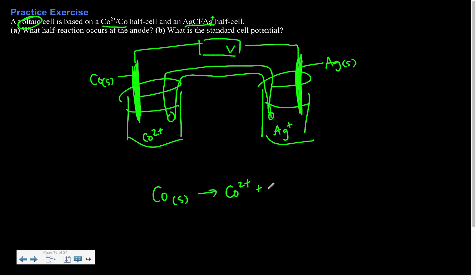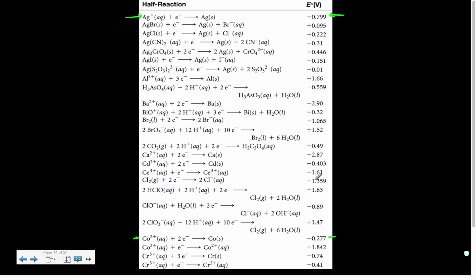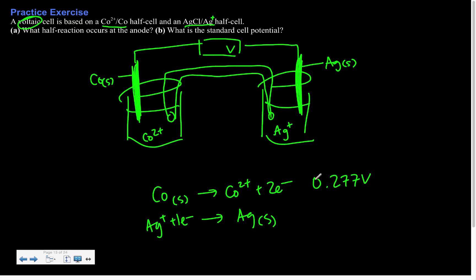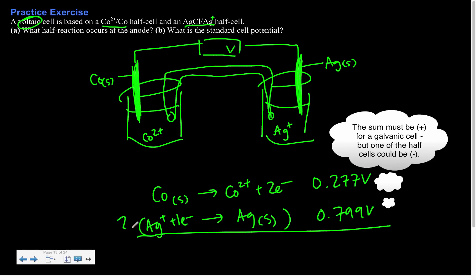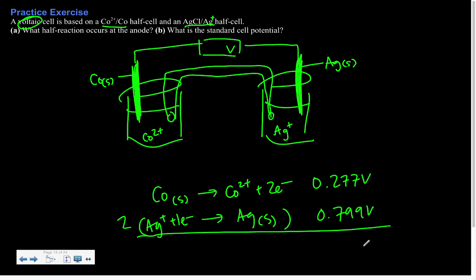Cobalt to cobalt 2+ gives us a positive 0.277V. And then we have our Ag, and that one had a positive value also, 0.799V. And then we would take this and multiply by 2, and that would give us our overall reaction. And this sum would give us our overall cell potential.